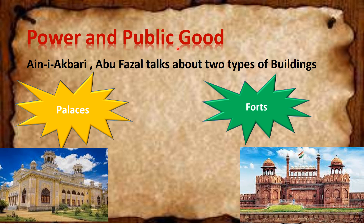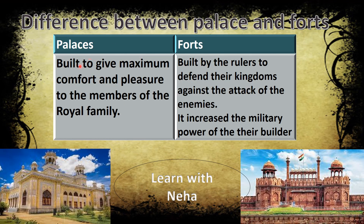Power and public good: why did kings and emperors build monuments? Abul Fazal talks about two types of buildings in his book Ain-i-Akbari — palaces and forts. Palaces were built to give maximum comfort and pleasure to members of the royal family, while forts were built by rulers to defend their kingdoms against the attack of enemies, increasing the military power of their builders. Strong forts prevented enemies from attacking the kingdom, and beautiful palaces spread the fame of the empire far and wide. Thus monumental architecture was a source of great prestige and glory for a kingdom or empire.